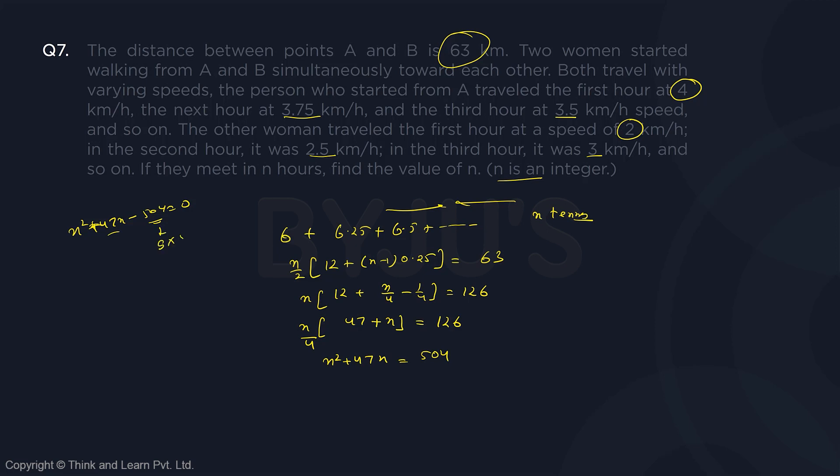That gives you 9 into 56, and the difference is, sorry, because this is minus. So difference of these two should be 47. If this would have been plus, then you need to find the sum as 47. It is nothing but n plus 56 and n minus 9 should be equal to 0.